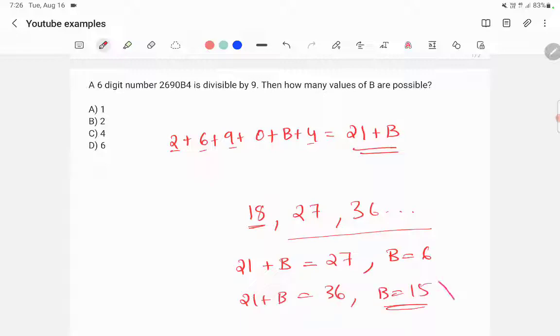But B is a single digit number, so this is not possible. So only possible value for 21 plus B is 27 and B will be 6.